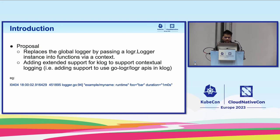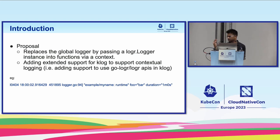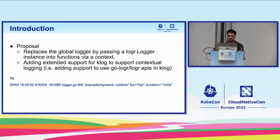The proposal is to replace the global logger and use logr.Logger, which provides freedom to use the original context. We extend support for klog to use logr capabilities to get the context from the parent. This sample contextual log is similar to a structured log — the difference is the number you see (like 451895), which represents context. It's similar to concepts in the proxy-wasm SDK where you get context from a thread; here we get the context from the parent.